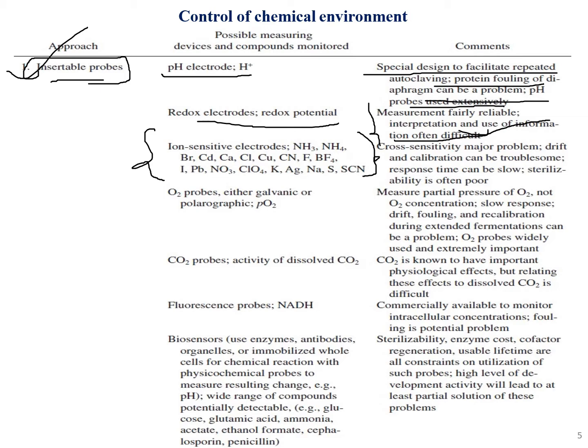We studied how to measure temperature, viscosity, and turbidity using individual instruments. However, insertable probes offer a major advantage — they can measure pH, detect specific ions, and act as oxygen probes or temperature probes, all while maintaining the sterility of the bioreactor at the same time.